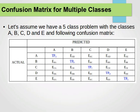Let's assume that we have a five-class problem with the classes A, B, C, D, and E, and then we run our model and end up with this confusion matrix. Notice that our predicted classes are the columns and our actual classes are the rows. These will be counts — integer numbers of classifications or misclassifications. The diagonal values will be the true positives of the corresponding class, and the off-diagonal values will be the errors.